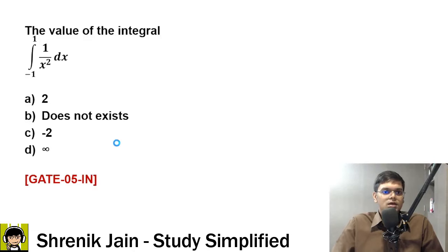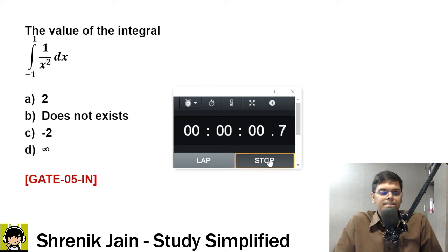The integral from minus 1 to 1 of dx upon x squared. Options a, b, c, or d. Now this is a very controversial question, but I have explained this question in class and I hope you remember. Do you remember that calculation? Improper integration, varieties of questions I have solved.